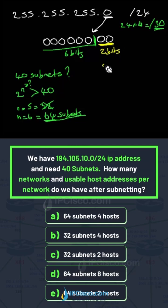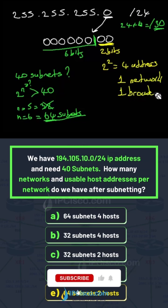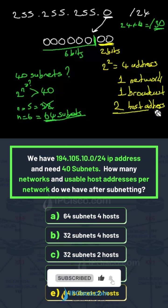The remaining bits are our host bits. With 2 bits left, we get 2 to the power of 2, which is 4 total addresses, and the usable host addresses are 2.